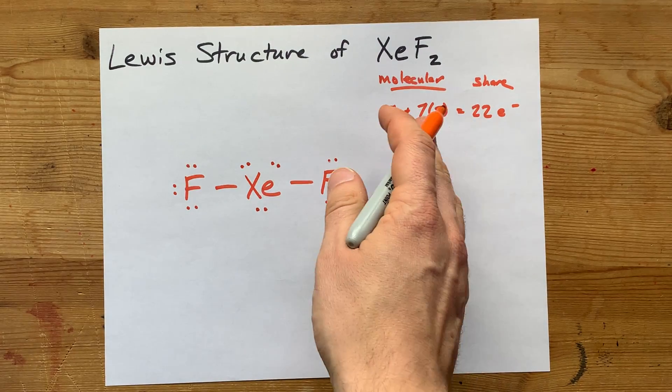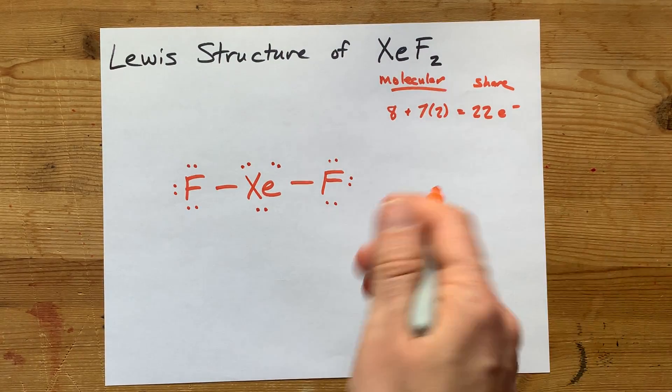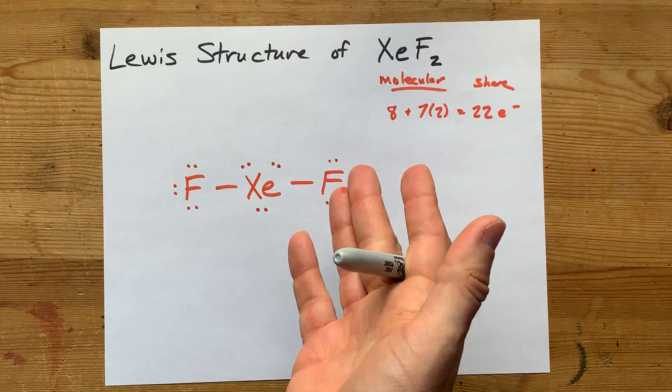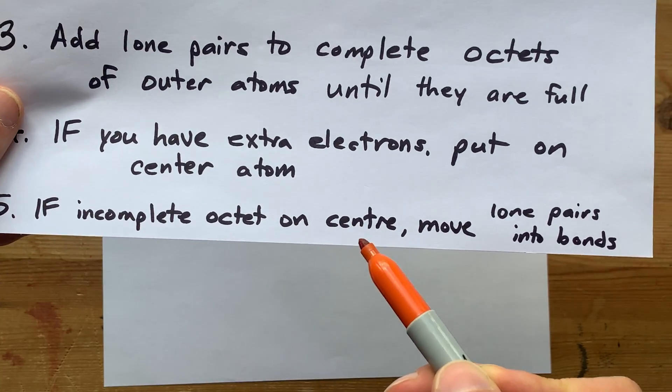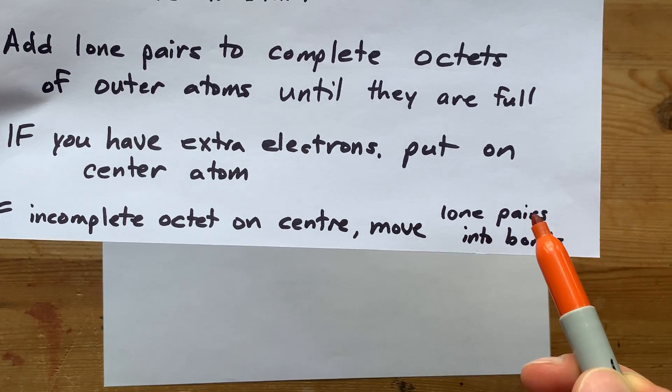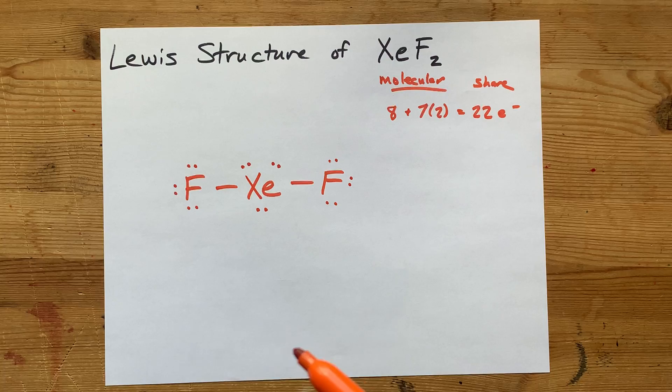All right. There you go. Now I've used up all the electrons. And again, just dump them on the center. You've got nowhere else you can put them. Now, if there's an incomplete octet on the central atom, we're going to move lone pairs from the outer atoms into bonds.